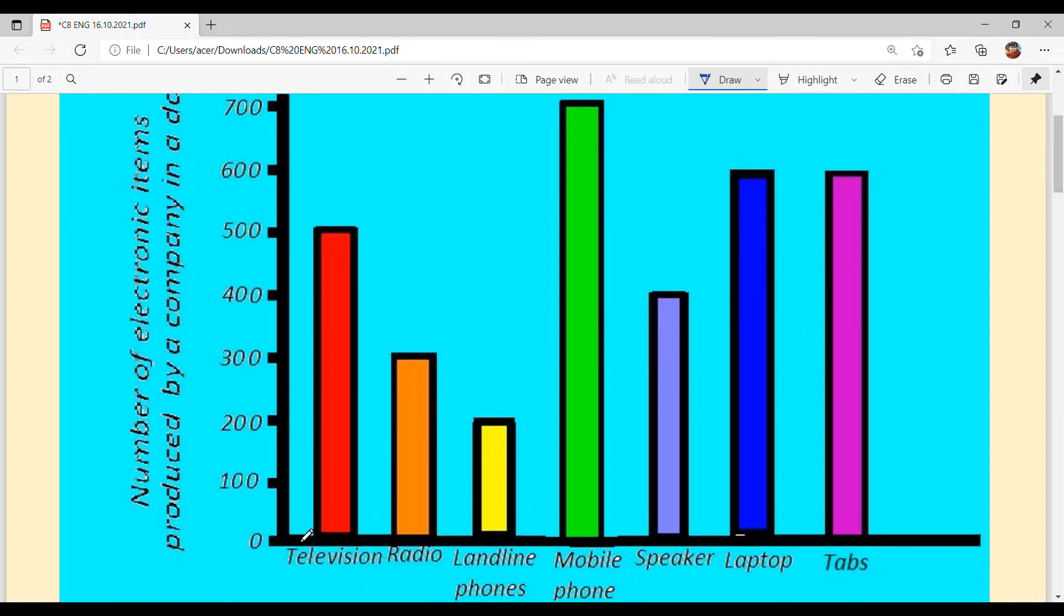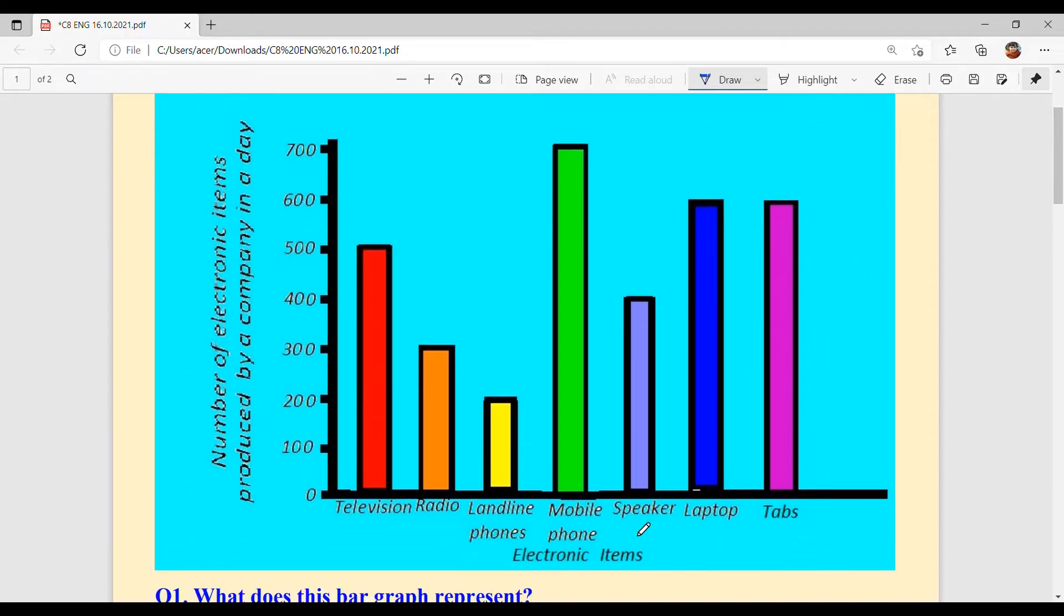You can see X axis which is written with red, they are representing television. Orange, radio. Yellow, landline phones. Green, mobile phones. Purple, speaker. Blue, laptop. Pink, tabs. And what are these? These are electronic items.